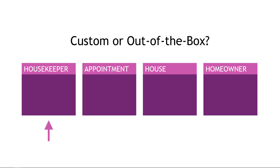Let's start with housekeepers. We said that they do need access to the app, and that means they're going to need Power Apps user accounts. Let's say that we're building a Power Apps model-driven app or using Dynamics 365. Out of the box, there's an entity for users where you can give each housekeeper a login, control their permissions, and so on. So we're going to reuse the user entity for this one, and it'll have all the standard fields we get out of the box — username, password, email address, and that kind of thing.